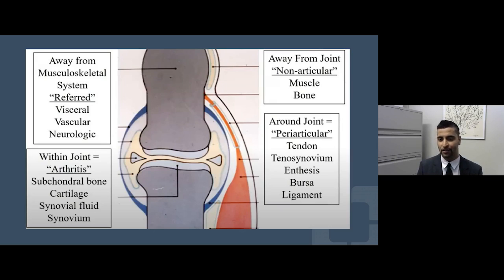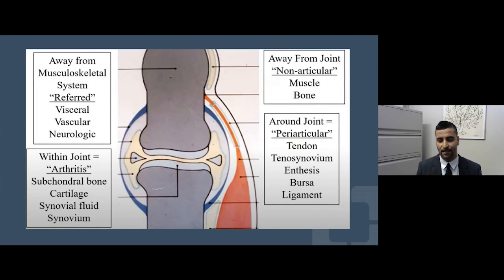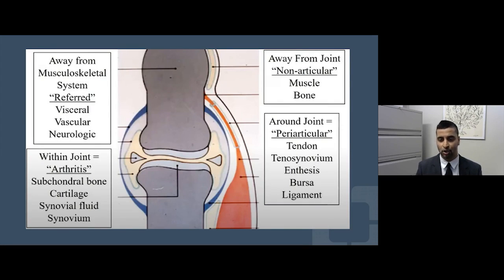There are several other etiologies of musculoskeletal pain that can happen around the joint — what we call periarticular structures. These include tendons (muscle-to-bone connections), ligaments (bone-to-bone connections), the enthesis where the tendon inserts into the bone, and bursa — fluid-filled sacks that help lubricate the joint. Many patients have rotator cuff tendinitis or trochanteric bursitis as a cause of hip pain, which we manage differently than rheumatoid arthritis.